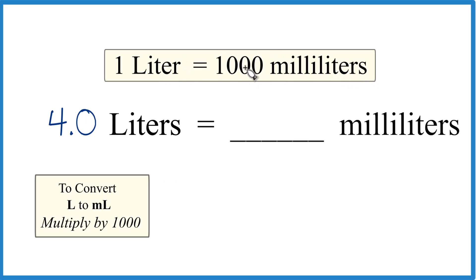So if 1 liter is 1,000 milliliters, 4 liters should be 4,000 milliliters. When you go from liters to milliliters, you multiply by 1,000.